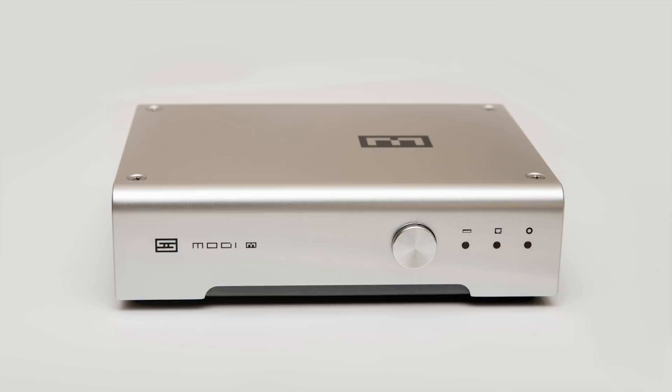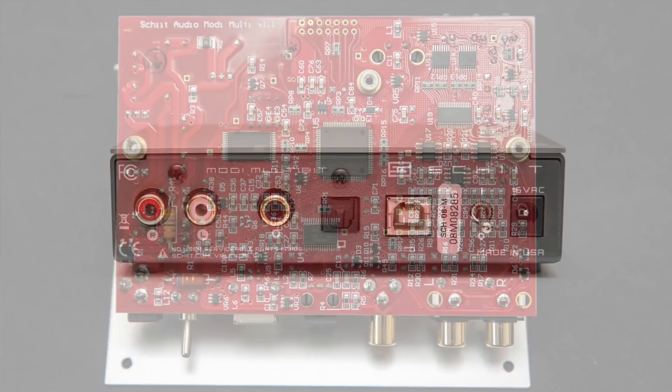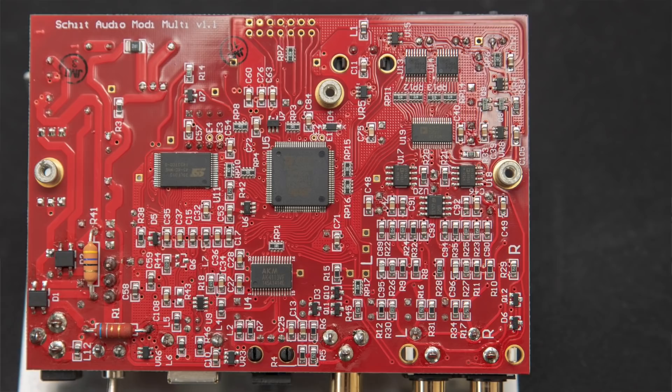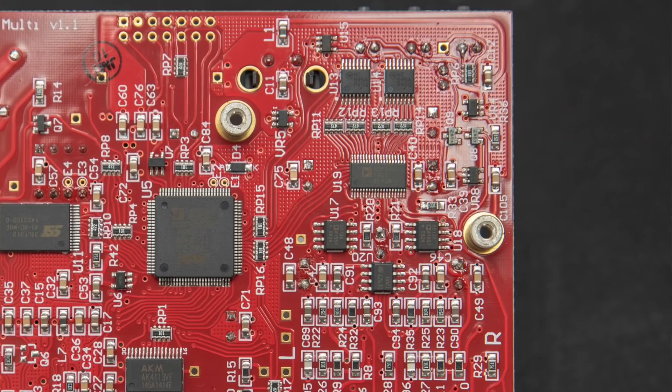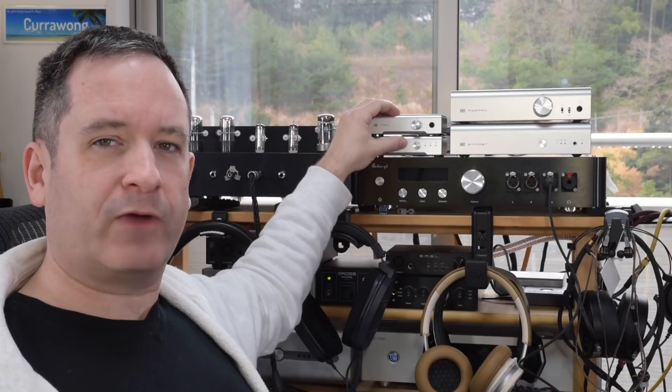The Moddy Multibit is the cheapest Multibit DAC in their line and while it is $150 more expensive than the regular Moddy, this is the result of using industrial R2R chips which are normally used in things like medical and military applications for controlling motors. They have to be very precisely made components and as such cost a lot of money. The whole setup here costs around $350.